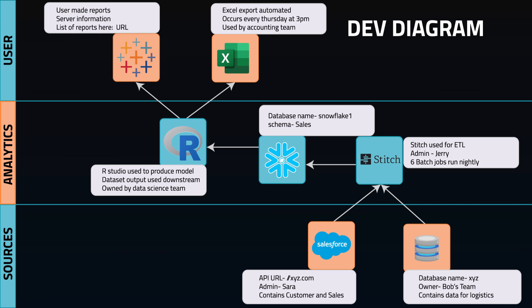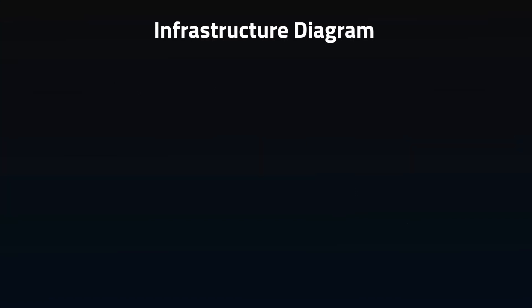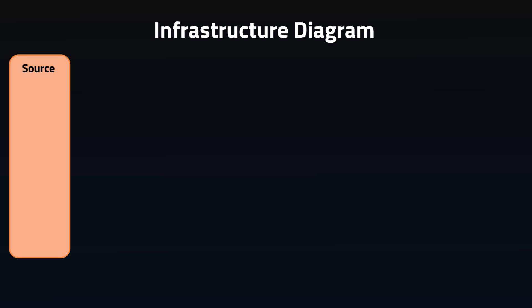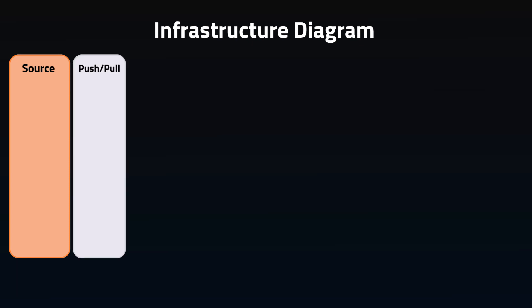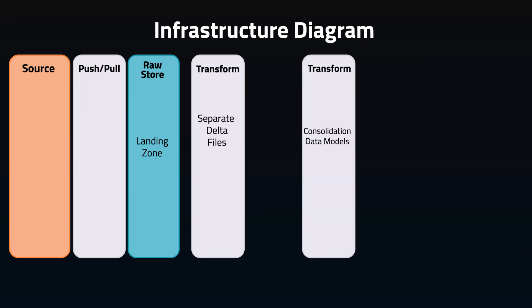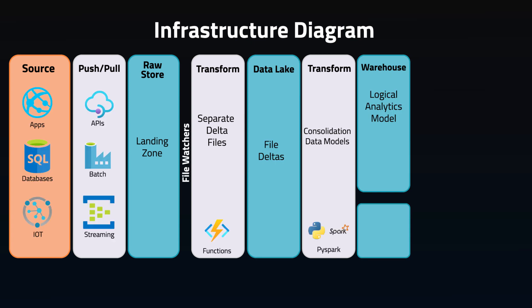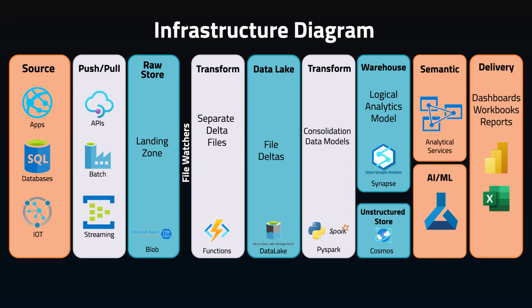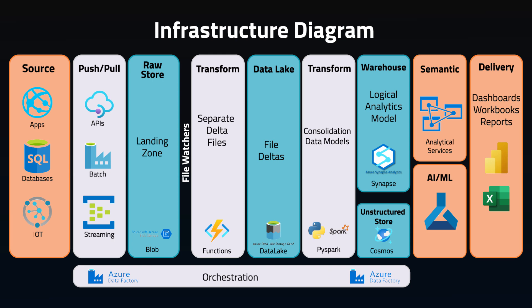Now we're getting to the classic infrastructure diagram. This time we'll be using an Azure platform. This is the overview of all the pieces of our data platform. We'll have our various sources from databases to apps to log data, how that data gets triggered for ingestion, our raw data or staging storage, transformation steps like going from raw storage to data lake to data warehouse, what tools we're going to be using for each of these steps, any additional layering for reporting or data science, and what we're going to use to orchestrate — basically a full overview of the tools and programs we'll use to create our platform and the general flow of data between them.